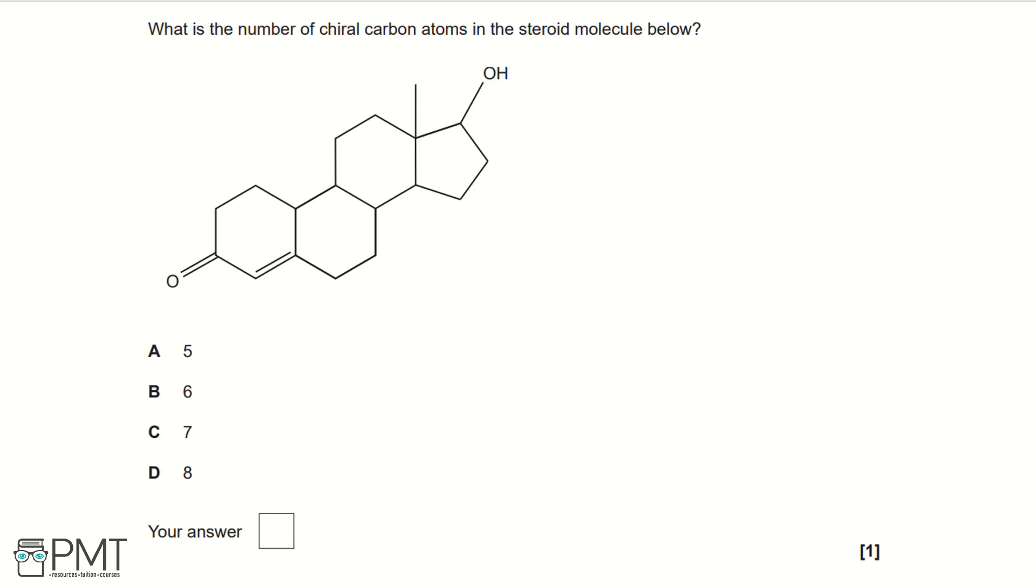if we work our way across from left to right, our first chiral carbon would be here. So we have four different groups attached. We have a hydrogen, we have this part of the steroid molecule, we have this part and we have this carbon-carbon bond.